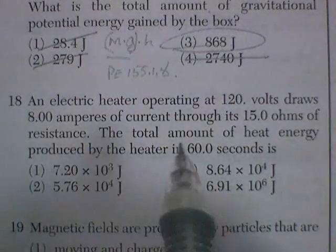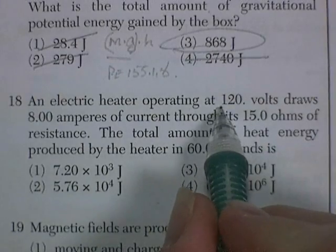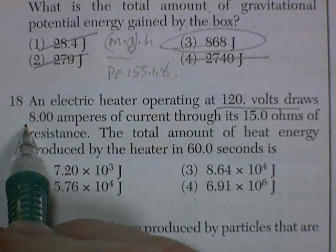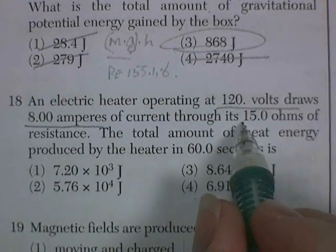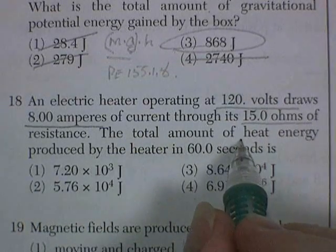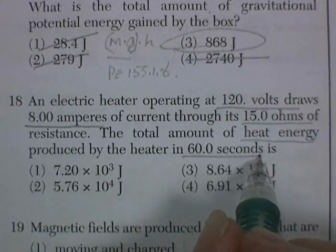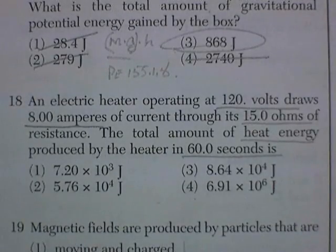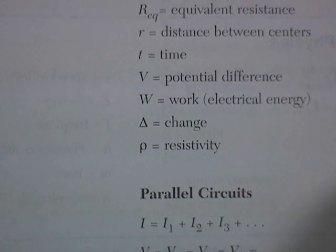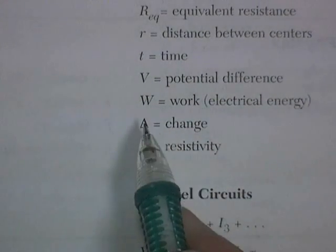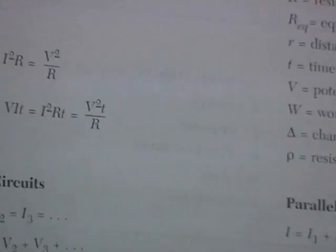Question 18. An electric heater operating at 120 volts draws 8 amps through a 15-ohm resistance. The total amount of heat energy in 60 seconds. In the electricity equation, we have work is equal to electric energy. So work is equal to power times time. I don't have power.